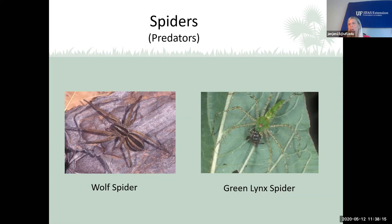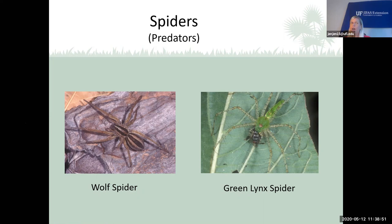Spiders are good to have in your landscape — they love to eat insects. Wolf spiders and green lynx spiders are very common in Florida and beneficial. In Florida we really only have two poisonous spiders: the brown widow and the black widow. You're not going to find those in your garden — they tend to live in garages, wood piles, or under picnic tables. If you see them, destroy them, but leave all other spiders in your landscape alone because they're doing good work for you.